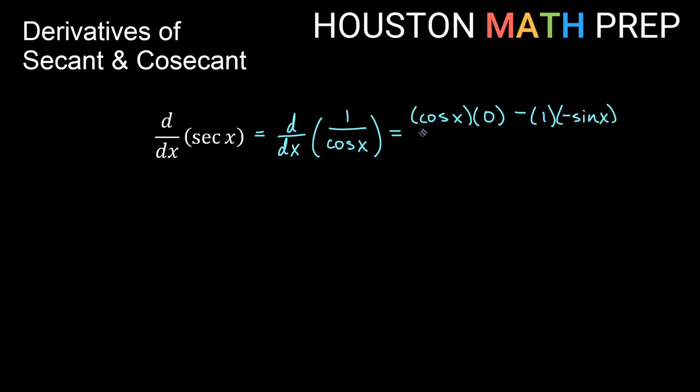And remember our quotient rule says all over the square of what lies below, and what's below is cosine x, so this is actually cosine squared x from our quotient rule. Alright, looking here 0 times cosine x is going to be 0 for this first part. Negative 1 times negative sine x, that will just give us sine of x over cosine squared x.